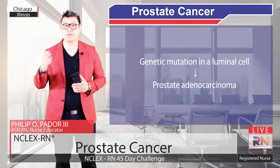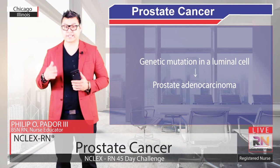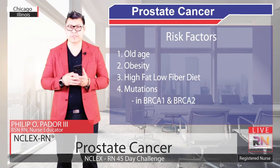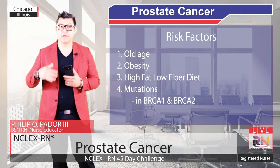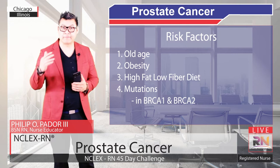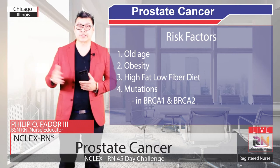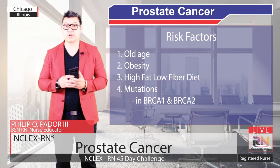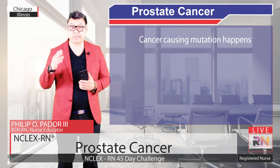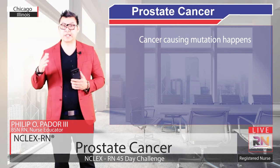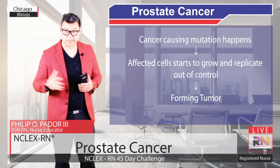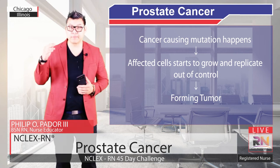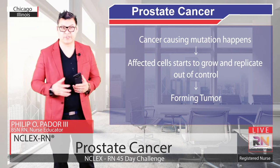Prostate adenocarcinoma most often results from genetic mutations in the luminal cell, but can also arise from basal cells, resulting in the cell dividing uncontrollably. Some risk factors for genetic mutations include old age, obesity, and high or low fiber diet. Mutations in two genes linked specifically to prostate cancer are breast cancer gene 1 and breast cancer gene 2, also known as BRCA1 and BRCA2, both of which also cause breast cancer. Once a cancer-causing mutation happens within a cell, the affected cell starts to grow and replicate out of control, forming a tumor. Early on, prostate cancer cells depend heavily on androgens for survival, but eventually the cancer cells mutate and find a way to keep multiplying without relying on androgens.